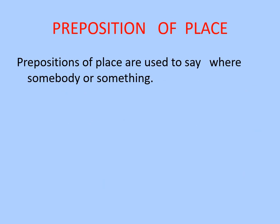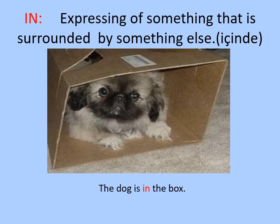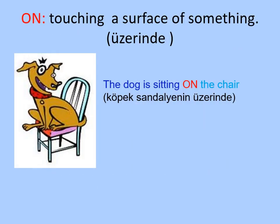Let's start with preposition of place. Prepositions of place are used to say where somebody or something is. The first preposition is 'in,' expressing something that is surrounded by something else. For example, the dog is in the box. 'On' means touching the surface of something. For example, the dog is on the chair.